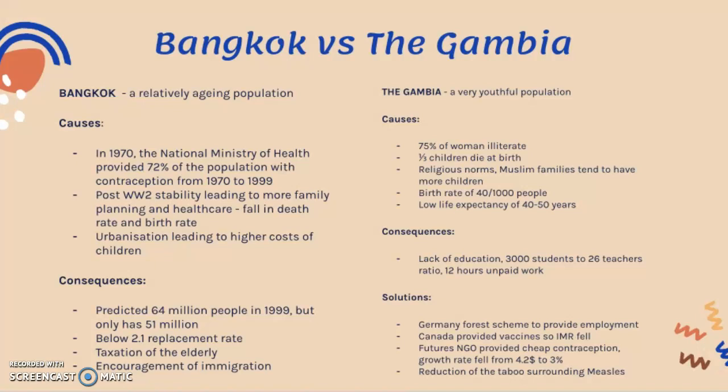provided 72 percent of the population with contraception until 1999. Moreover, there was post-World War II stability which led to more family planning and more provision of healthcare from the government, leading to a fall in death rates and birth rates. Urbanization due to economic development in Thailand over the past few decades has led to higher costs of raising children and a higher cost of living, discouraging people